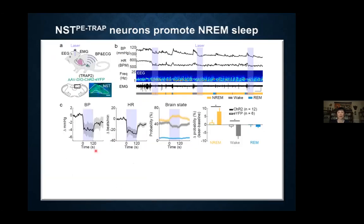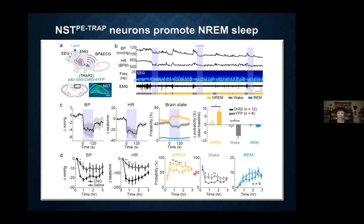We did optogenetic activation of these cells. In addition to EEG and EMG, we also measured blood pressure and heart rate. When we turn on the laser, there's a very immediate drop in blood pressure and heart rate, consistent with these being cardiovascular cells. But in addition, we also saw a pretty clear increase in non-REM sleep. Comparing channelrhodopsin versus YFP control confirms the effect.